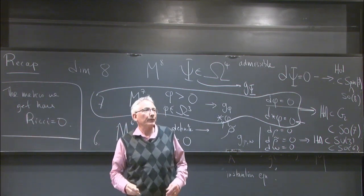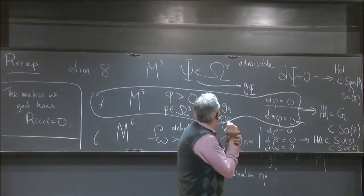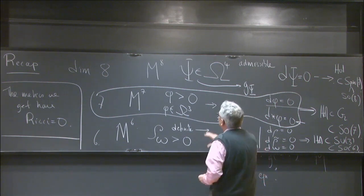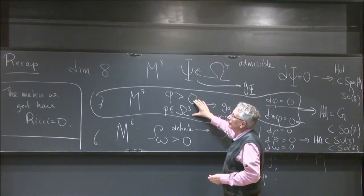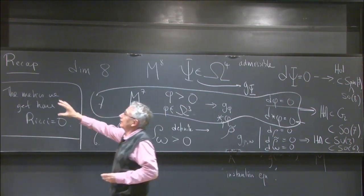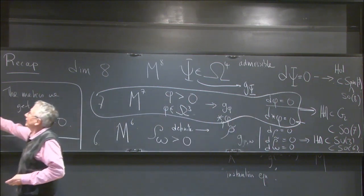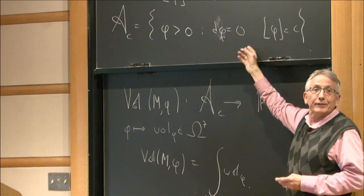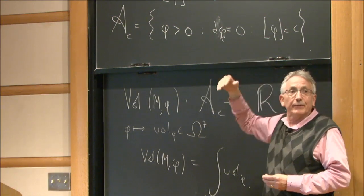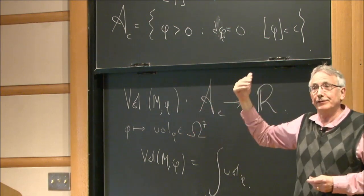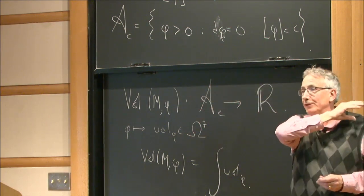The observation is that this equation — D(star_phi of phi) = 0 — is just the Euler-Lagrange equation for the volume function in this setting. So we can think of our problem of trying to find these structures as first understanding this coarser problem, and then finding critical points of this volume function.